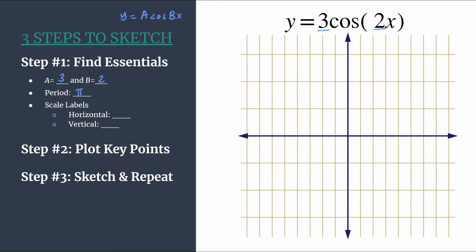So the last thing we want to do to get ourselves set up for success is choose our scale labels. How are we going to count each tick mark? And so with this method what I like to do for the horizontal axis, we will set the scale by taking the period and dividing it by 4.